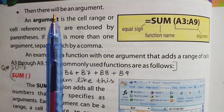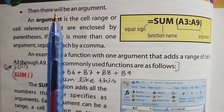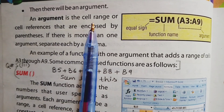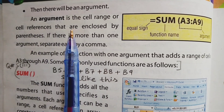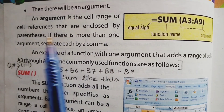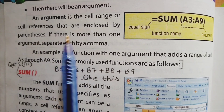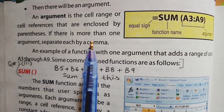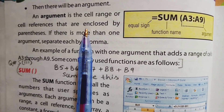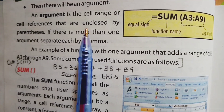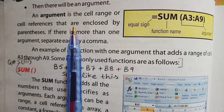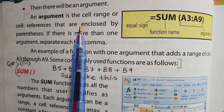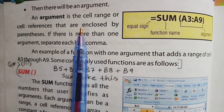After inserting the function, the next part is the argument. An argument is the cell range or cell references that are enclosed by parentheses. If there is more than one argument, separate each by a comma. An argument is basically the cell range on which the function is being applied.